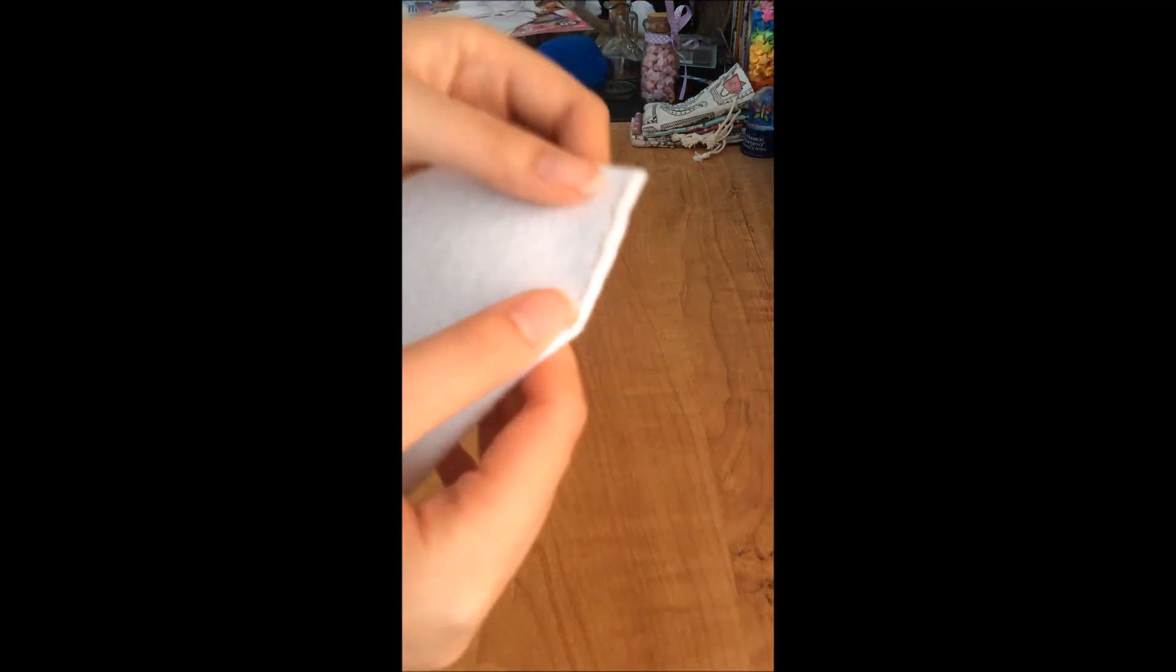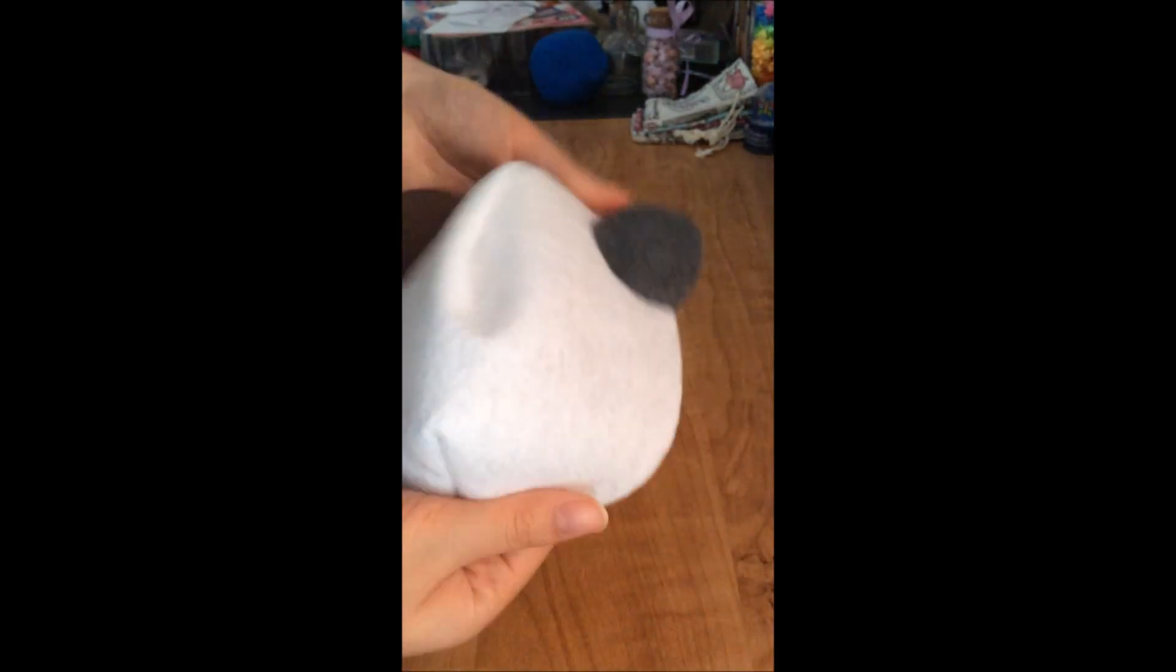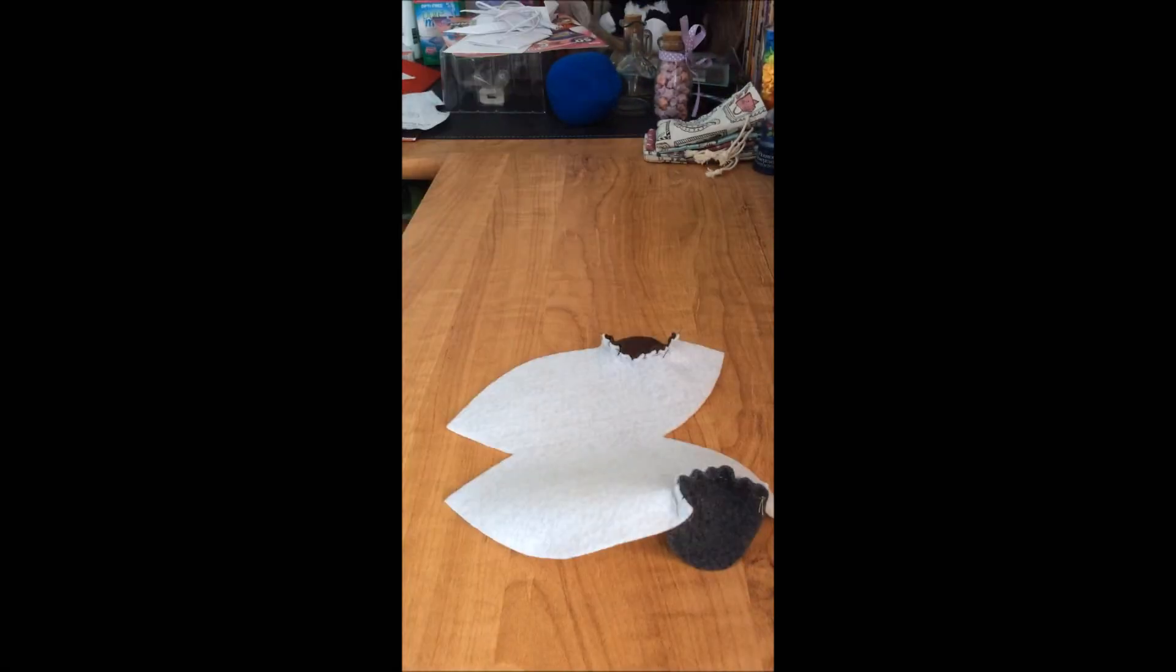After you're done, tie a knot and cut the string. And you're done with one half of the body for the cat.